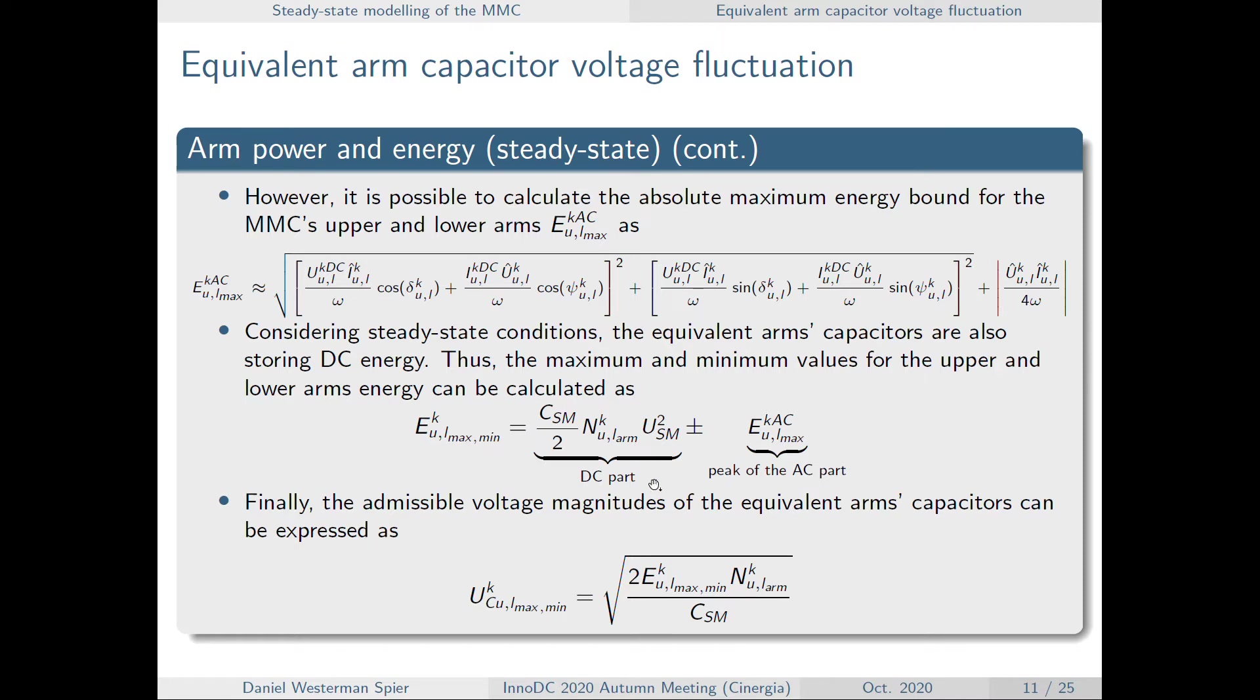Then under steady state conditions, the capacitors, the equivalent arm capacitors, they're going to have a DC energy value, which is calculated with this expression. So this term represents the submodule capacitance. This is the number of available submodules. And this term is the voltage in the submodule.